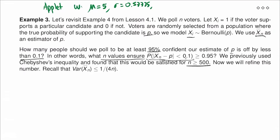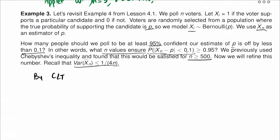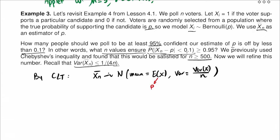Now we refine this using the CLT, recalling that the variance p(1−p)/n is less than or equal to 1/(4n). By CLT, x̄_n is approximately normally distributed with mean p and variance p(1−p)/n, which is at most 1/(4n).